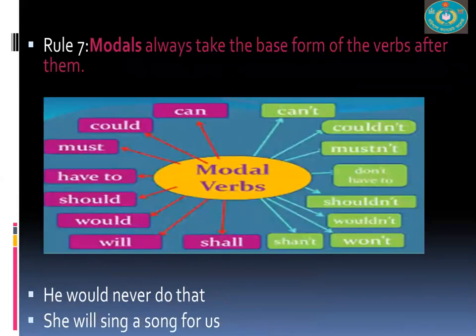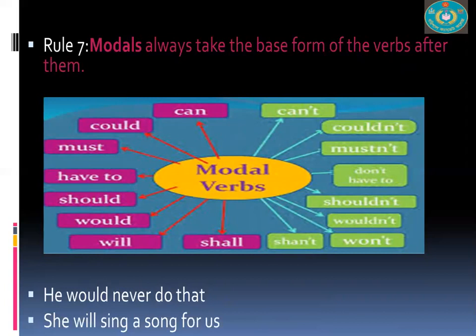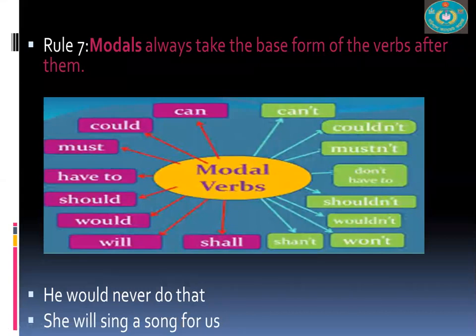Modals — can, could, must, have to, should, would, will, shall, ought, wouldn't, shouldn't — always take the base form of the verb after them. Whatever the tense of the sentence, after a modal verb you must use the base form of the verb. The tense is expressed by the modal verb itself, not by inflecting the following verb.